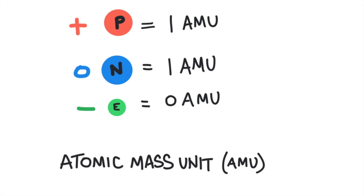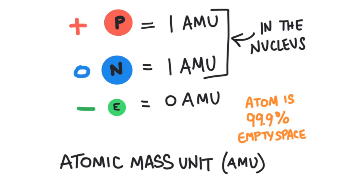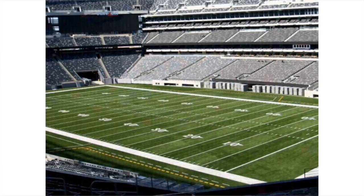Where are these particles? Protons and neutrons reside in the nucleus of the atom. This is a really dense center of the atom. We know that the atom is really small, but the nucleus only accounts for a tiny percentage of the atom's volume. The atom is mostly empty space — actually 99.9% of the atom is empty space. If the atom was the size of a football stadium, the nucleus would be the size of a blueberry at the very center of the field.